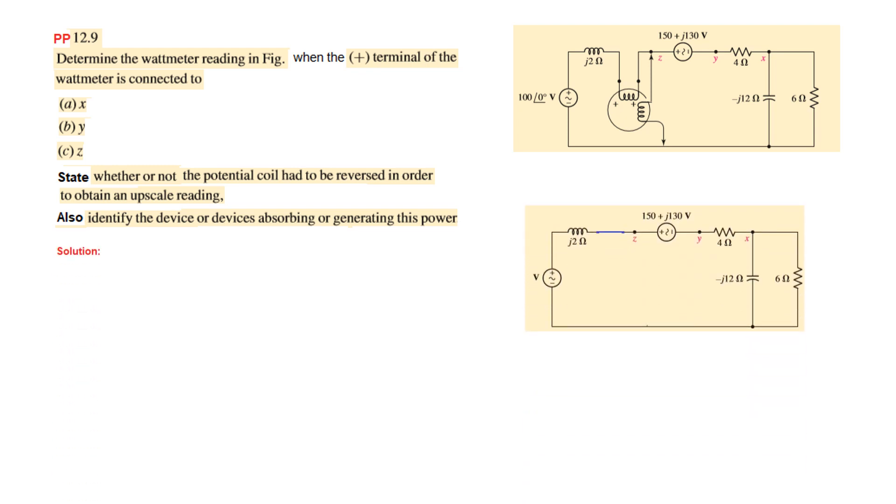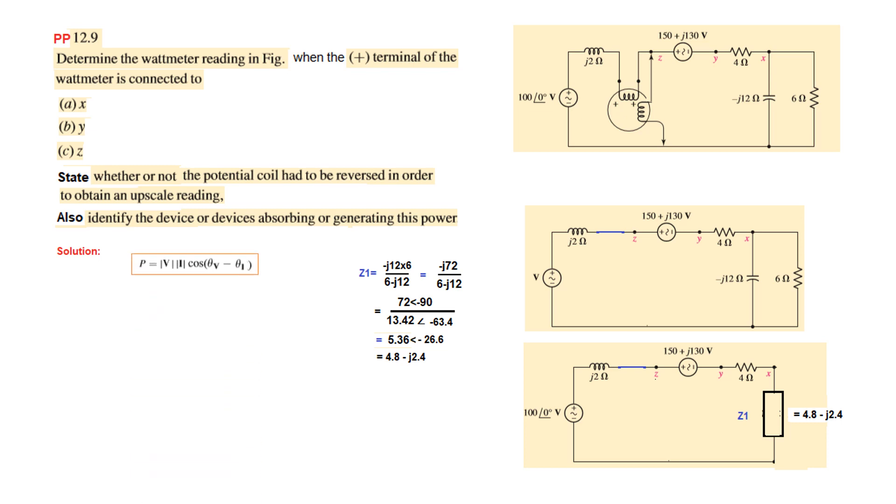We can simplify this circuit by eliminating the coil. This is where the current coil was present. Without this, this is the circuit that we have. We can solve this into parallel. We find z1 which is minus j12 parallel 6, so z1 becomes 4.8 minus j24. So we can draw the circuit. This is our equivalent circuit now. These two are replaced by z1 impedance which has this value. Now we can find the current through the circuit.